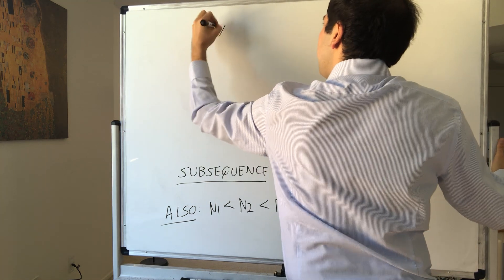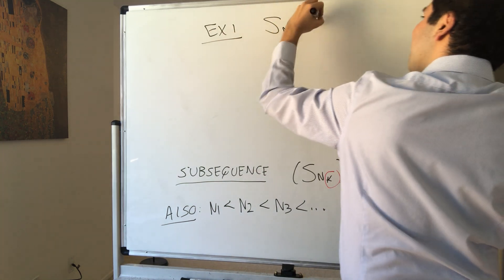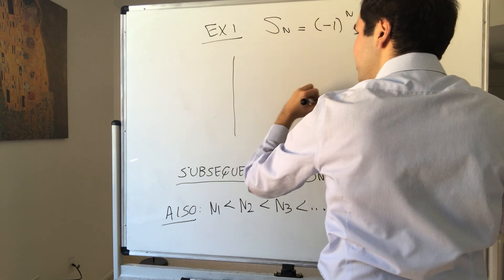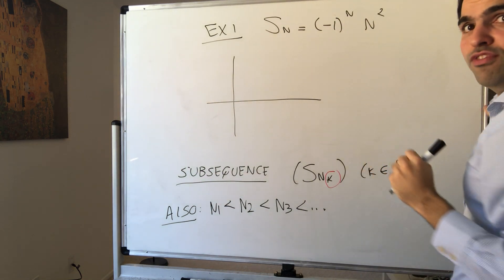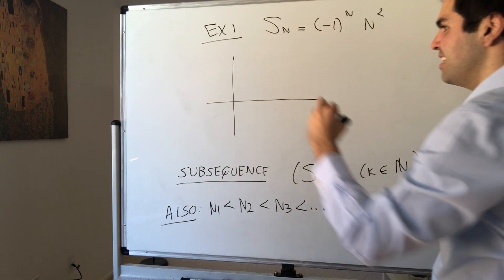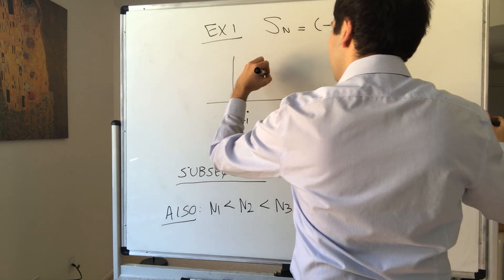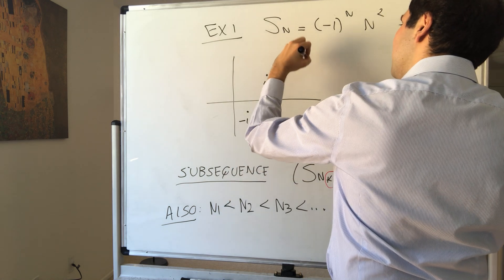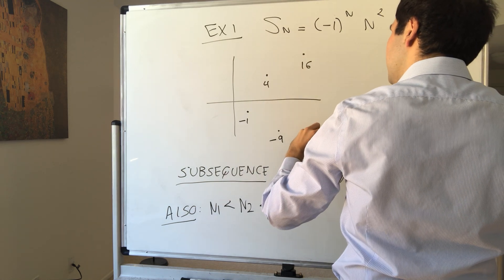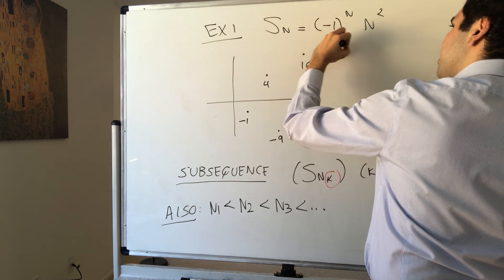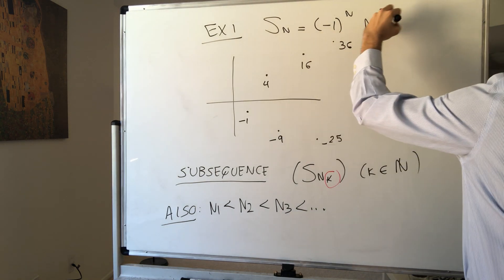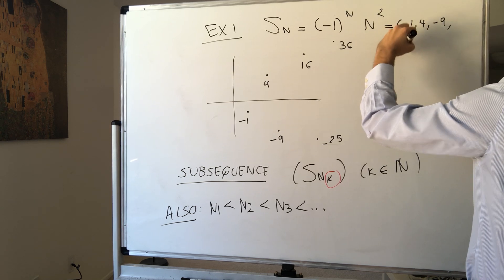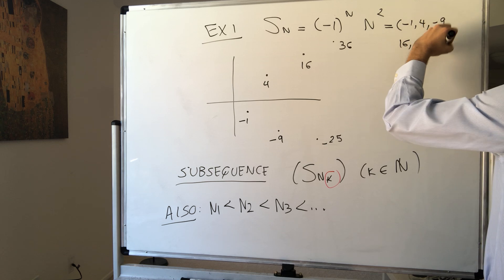So first example, consider the following sequence. Sn is minus 1 to the n times n-squared. And this one just jumps back and forth between n-squared and minus n-squared. So the first value is minus 1, the second value is 4, the third value is minus 9, the fourth value is 16, and then minus 25, and then 36. So it becomes minus 1, 4, minus 9, and 16, minus 25, 36.